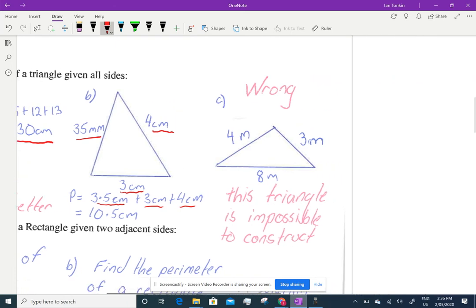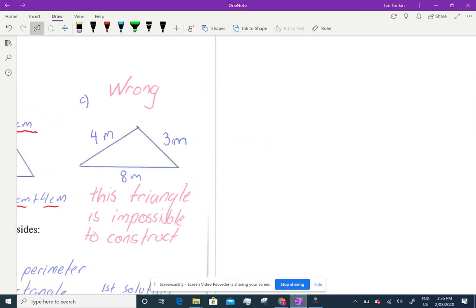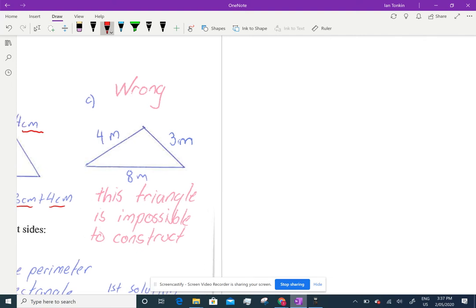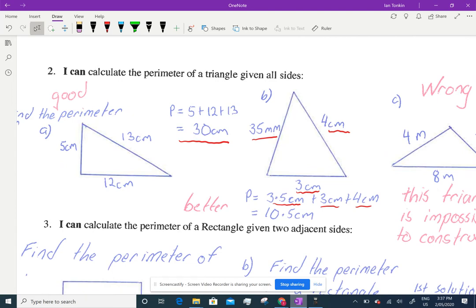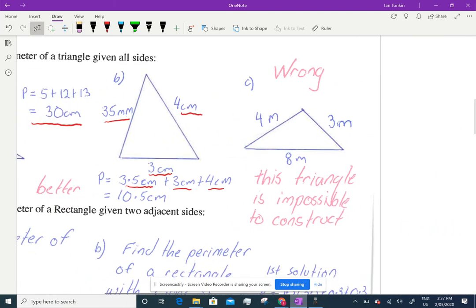Now, be careful when you do your triangle. For example, this triangle here cannot be drawn. If you want to have a go at it, try. But because the longest side is 8 and the two shorter sides are 4 and 3 add up to 7, you can't draw this triangle. It doesn't exist. This triangle cannot be drawn. So, be very careful when you're making up a question. Make sure the triangle or the shape that you have is able to be constructed or drawn.